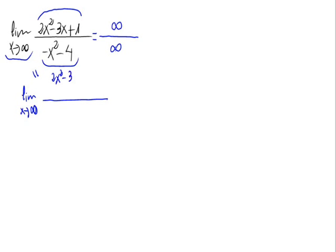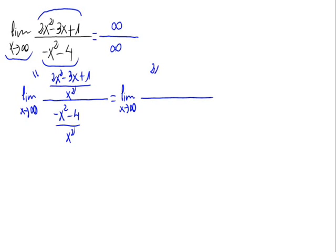Dividing the numerator, we would have 2x squared minus 3x plus 1, divided by x squared. And the denominator would be minus x squared minus 4, divided by x squared.